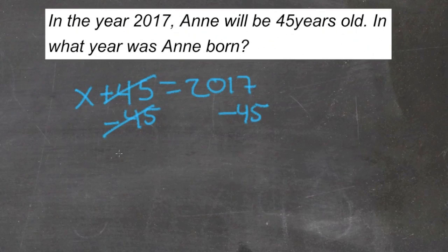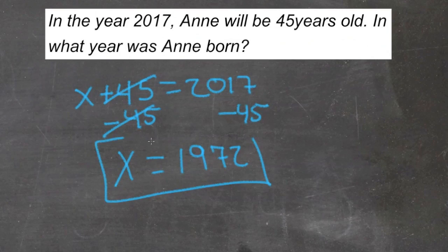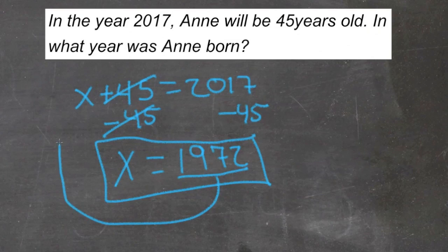This goes away. We're left with just x on this side. 2017 minus 45 is 1972. We can check our answer by plugging it back into our original equation. 1972 plus 45 is 2017.